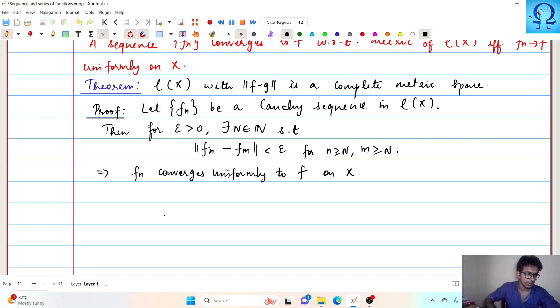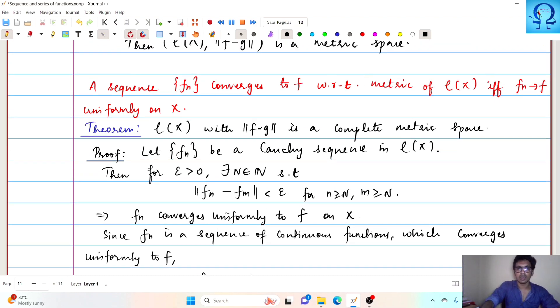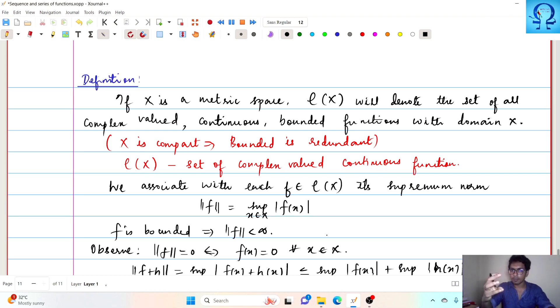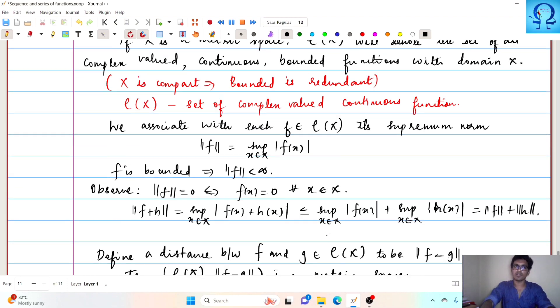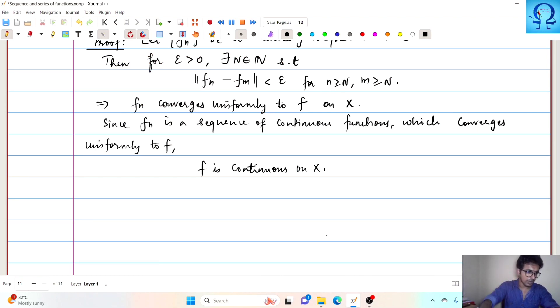Since f_n is a sequence of continuous functions which converges uniformly to f, we can conclude that f is continuous on X. Now if a function has to be a member of C of X, it should be what? Complex valued, continuous and bounded. Now that we have proved it is continuous, complex valued is inbuilt.